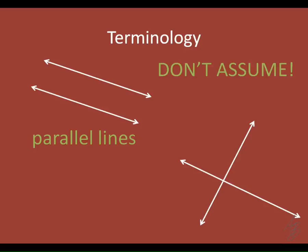We don't want to assume lines are parallel, just like we don't assume three points are collinear unless a line goes through them. With parallel lines, we base it on how they're marked — we mark them with those arrows to show they are parallel.